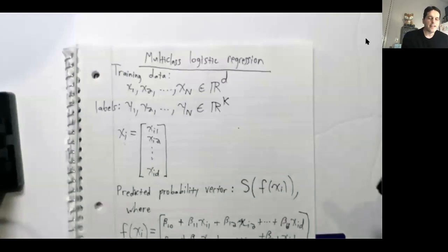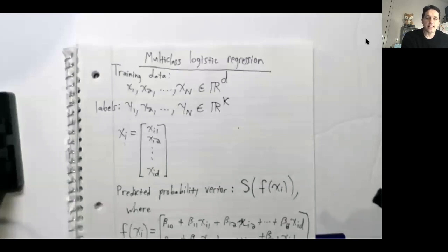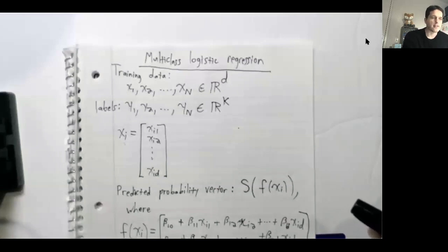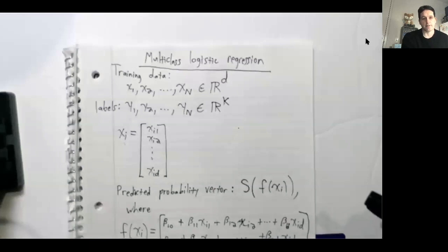I've been saying that linear regression and logistic regression are the simplest examples of neural networks. In this video we're going to take the step from logistic regression to neural networks. Neural networks are like a natural generalization of the idea of logistic regression.